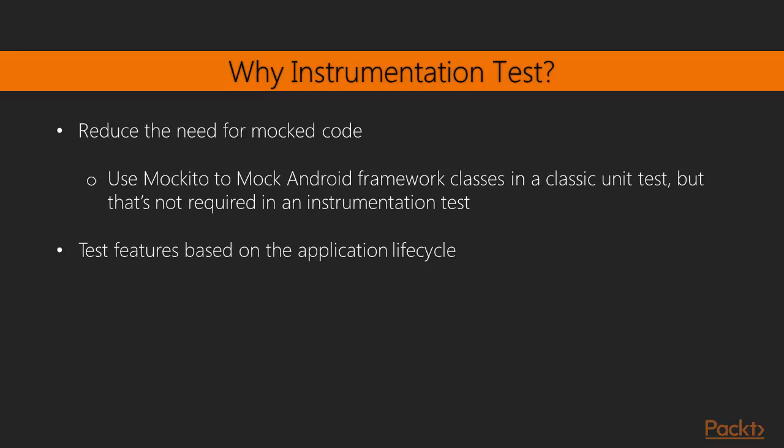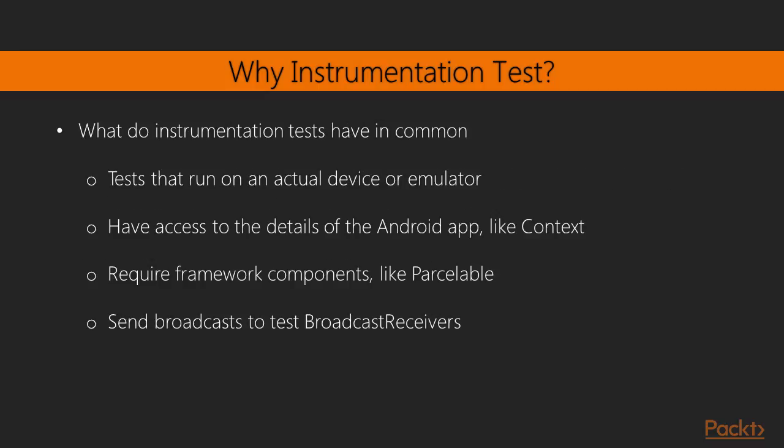We can write these tests based on the application lifecycle — onCreate, onStart, onPause, onResume. With a unit test, we didn't have to have an emulator running, and if we don't need the emulator, let's keep it as a unit test because the emulator does take some time and overhead to bring up. But if we do need the emulator to run so that we can interact with an activity, then an instrumentation test is the way to go.